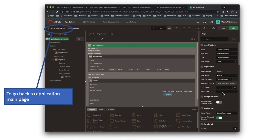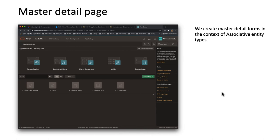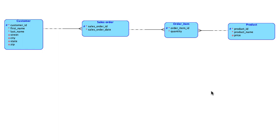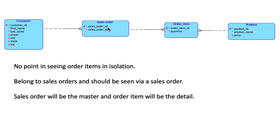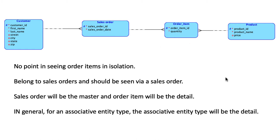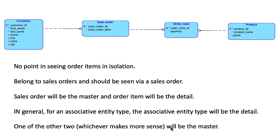Once you get to the application page, what you want to do is start creating the master-detail page. This is the root page for this particular application. We'll create master-detail forms in the context of associative entity types — we've already discussed that. So we click create page. There is no point in seeing order items in isolation; we want to see order items in the context of sales order because order items appear within sales order. So sales order is going to be the master and order item will be the detail. In general, for any associative entity type, the associative entity type will be the detail and one of the other two — whichever makes more sense — will be the master.